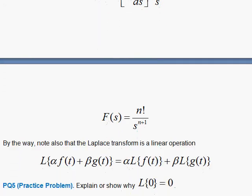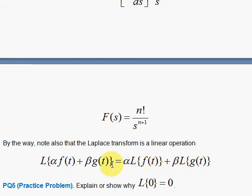I like to point out that the Laplace transform is a linear operation. The definition of a linear operation is: if you have alpha times this function plus beta times another function and you apply the operator to the combination, the alpha gets pulled right out and you take the linear operation on f of t, and then beta pulls right out and the similar operation on g of t. So that's a linear operation, and it applies to the Laplace transform. And the Laplace transform of 0 is 0.